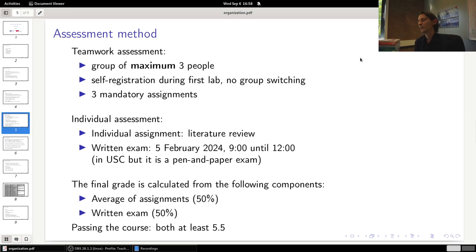The assessment method for the course basically consists of assignments and an exam. The assignments themselves are part group work and part individual. For the group work, you will form groups of maximum three people in which you will do programming assignments. There are three mandatory programming assignments that you have to complete. For these programming assignments you can choose your own programming language that you want to work in, of course you have to decide this as a group.